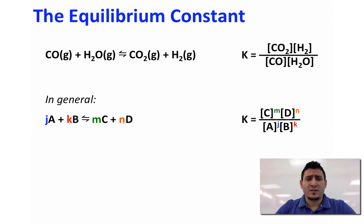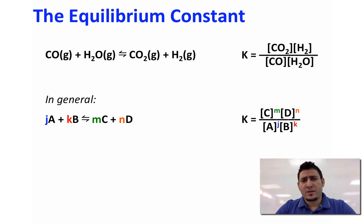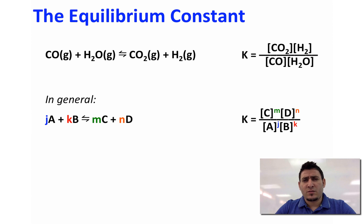In general, if we have a reaction of the form JA + KB → MC + ND, the coefficients J, K, M, and N become the powers of the concentrations in the equilibrium constant expression. Therefore K is written as concentration of C to the power M times concentration of D to the power N, divided by concentration of A to the power J times concentration of B to the power K.